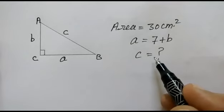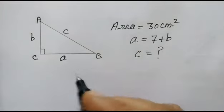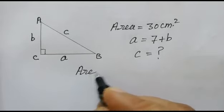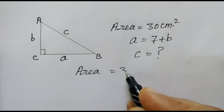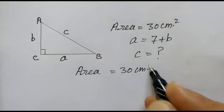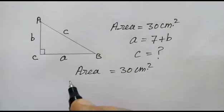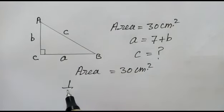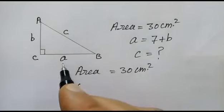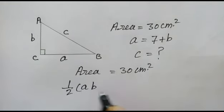Let's start. Area of the right angle triangle is 30 centimeter square as we have given. As we know, area will be equal to half base into height, which is half a into b.